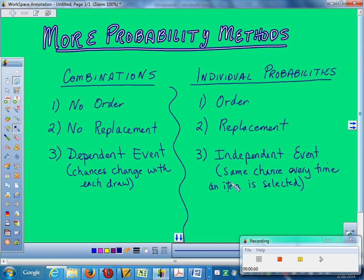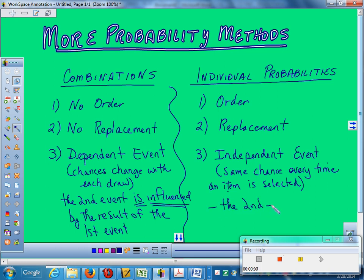If you draw an ace out of the deck, you put it back in and you draw again. Did my chances change? Nope. So, I still have the same chance every time. Another way to do dependent events, the second event is influenced by the result of the first event. Whereas on independent, it's the exact same definition except the second event is not influenced by the outcome of the first event.